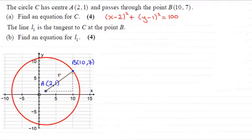Hi there. Now, in the first part of this question we found the equation of the circle C. It was (x - 2)² + (y - 1)² = 100.